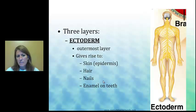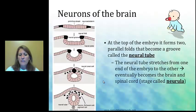One part is going to become the embryo, and the other will develop into the placenta. The ectoderm is the outermost layer — ecto means outside. So anything that is a covering: skin, which is called your epidermis, hair, nails, and the enamel of your teeth.